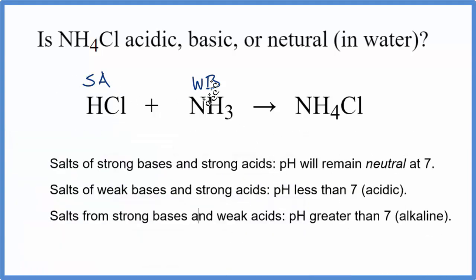We have a strong acid and a weak base. According to these rules, the pH of the solution will be less than 7, so it'll be acidic. In answer to our question, NH4Cl will be acidic when it's dissolved in water.